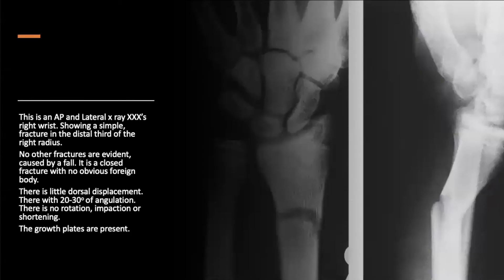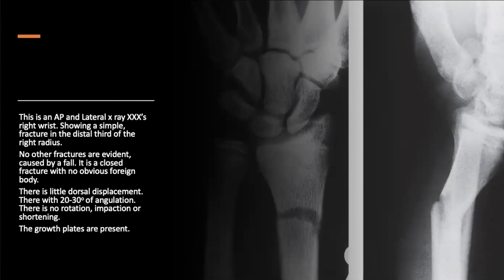I'm going to break the golden rule of presentations and put a lot of text, but something along the lines of: an AP and lateral x-ray of a right wrist showing a simple fracture in the distal third of the right radius. There are no other fractures evident. It's a closed fracture with no obvious foreign bodies. There is a little dorsal displacement, probably 20 to 30 degrees of angulation, no rotation, impaction, or shortening, and the growth plates are present. I'm not a radiologist, but it's worth thinking about when referring to a colleague who can't see the x-ray over the phone.